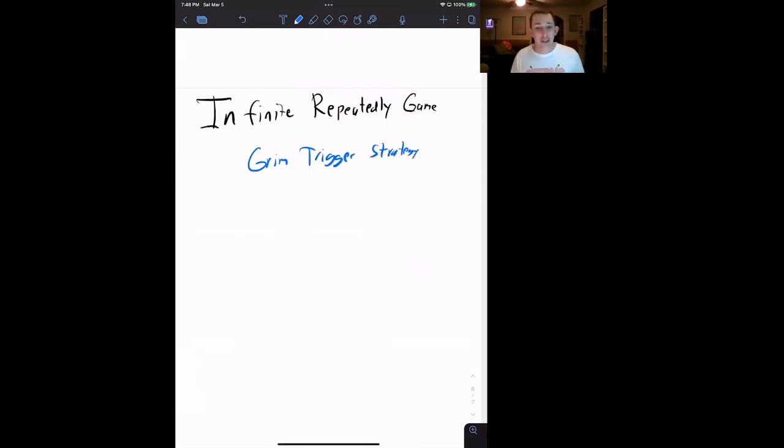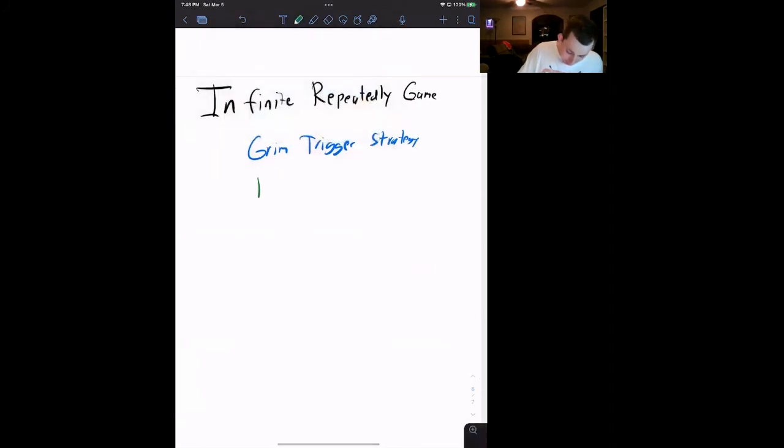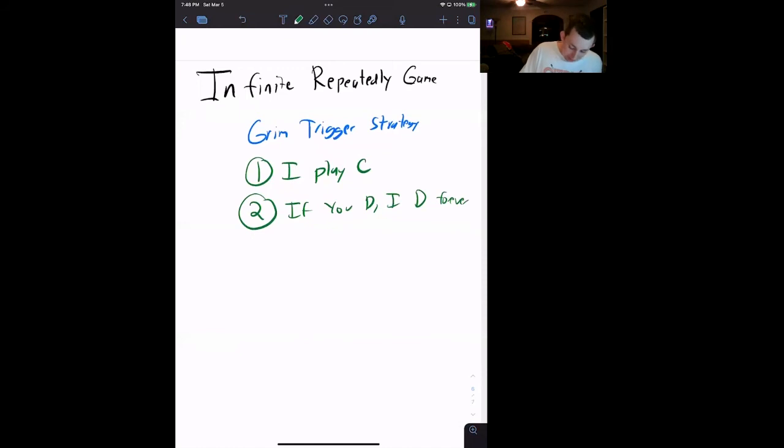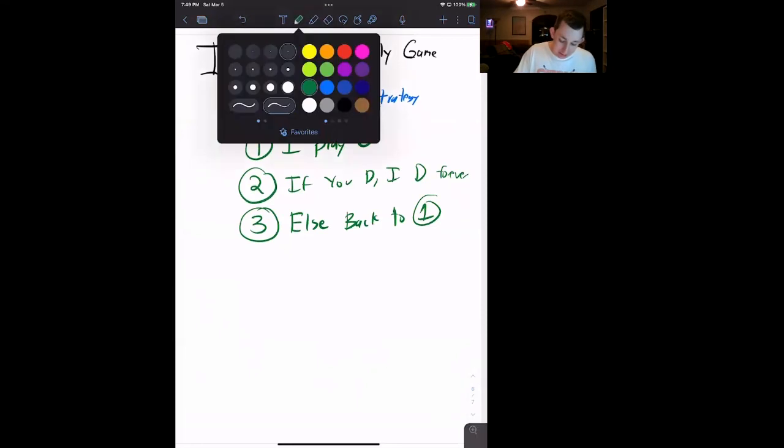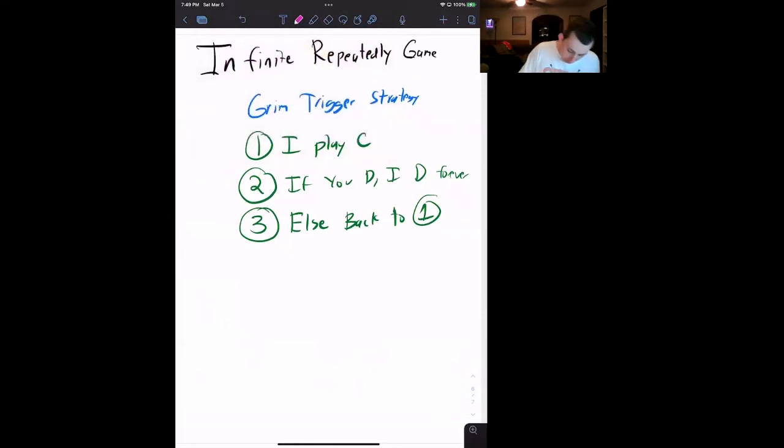The Grim Trigger Strategy goes like this. Part one: I play cooperate. Part two: if you defect, I defect literally forever, forever and ever and ever. I will play defect on you no matter what you do, no matter how much you beg me to play cooperate. I'm going to play defect forever and I will never forgive you for playing defect on me. Otherwise, if you play cooperate like I really hope you do, otherwise I'm going to punish you forever, then next round we return to step one, and we go on and on. So the question is, is this a Nash equilibrium? Let's find out.